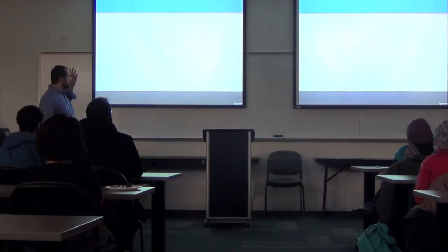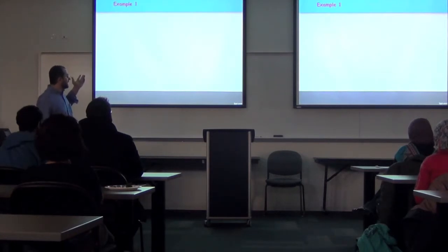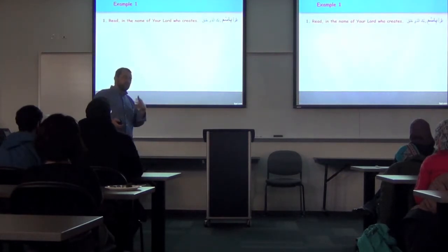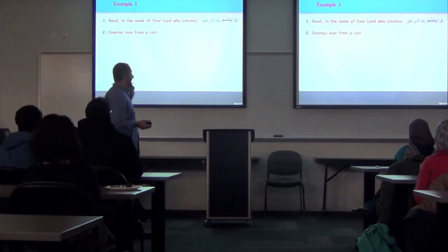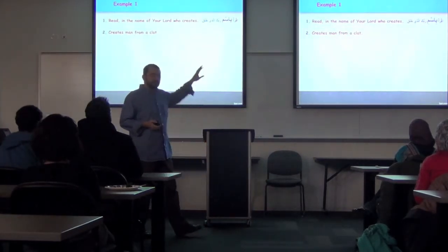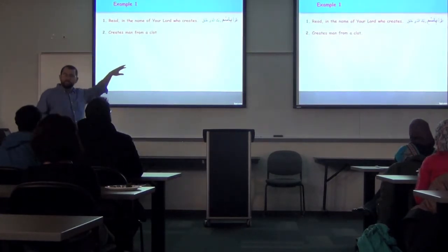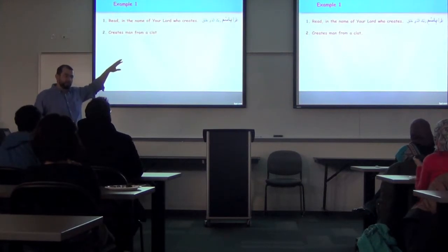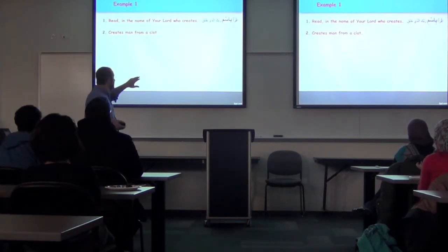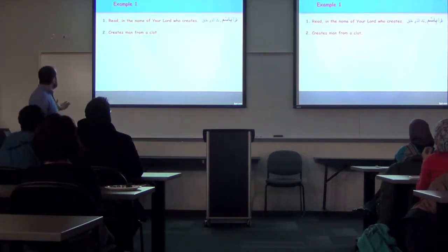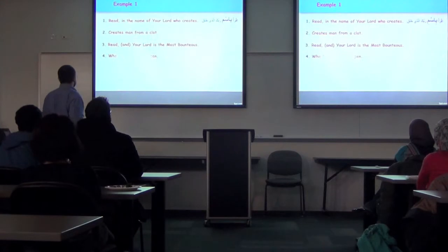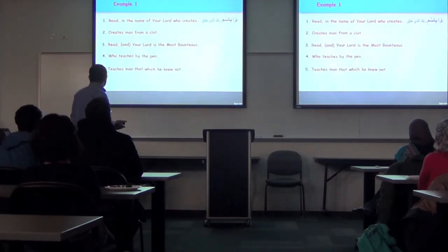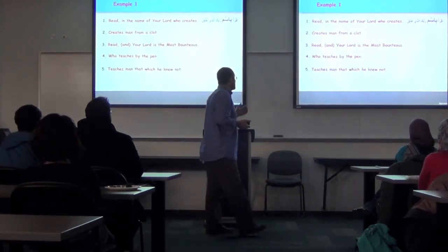And then it is reported that these five verses were revealed. Then Gabriel taught him these five verses. It goes like this: read in the name of your Lord who creates or who created. I actually included the Arabic there. Don't let it frighten you. There's a reason why I'm going with the Arabic letters in my next slide. The second verse says, creates man or created man from alaq. And then it says, read, your Lord is the most bounteous. And then the fourth verse says, who teaches by the pen. And in the fifth verse it says, teaches man that which he knew not.